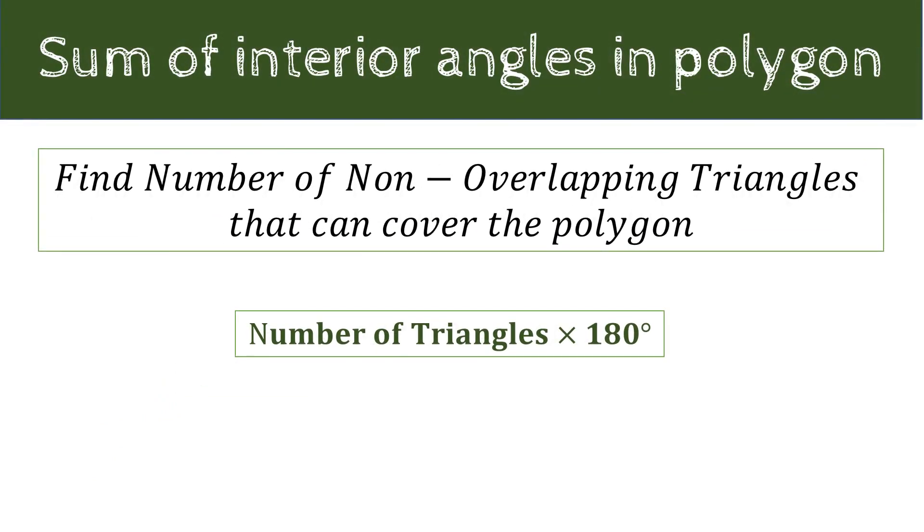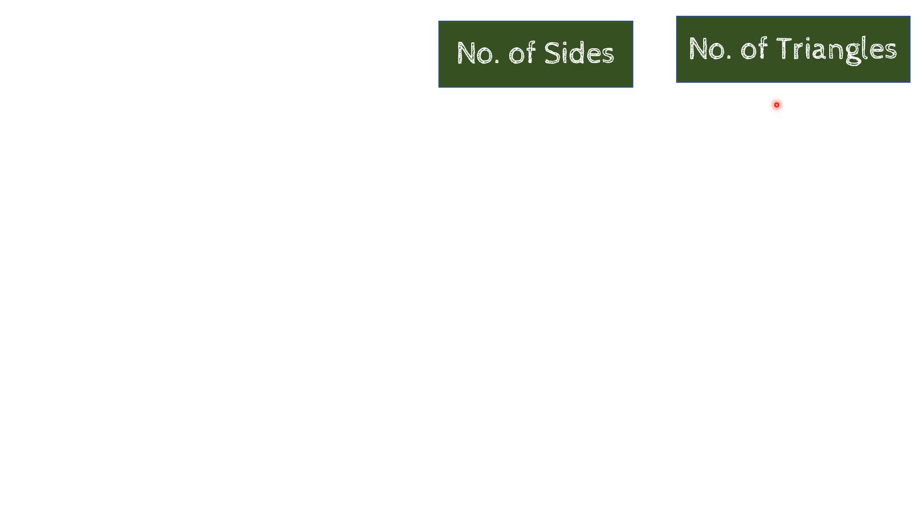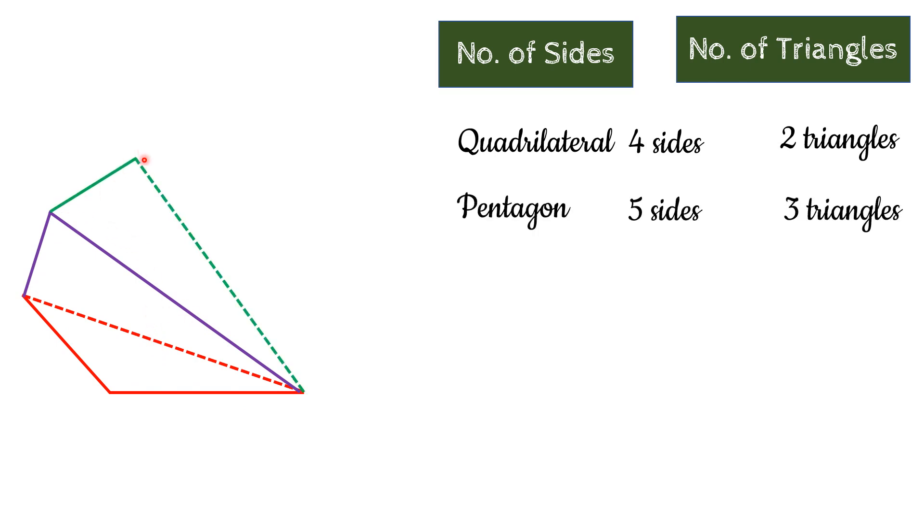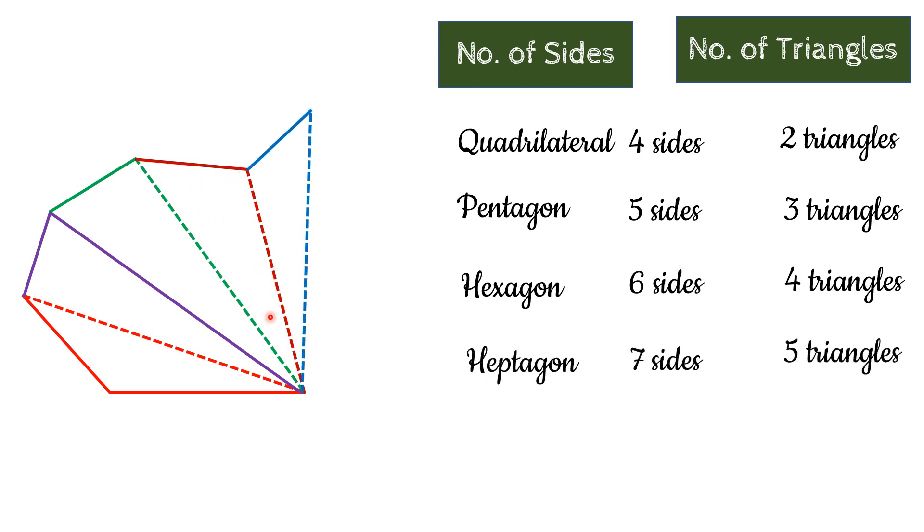Let us try to find a general case with n-side polygon. We always try to find out the number of non-overlapping triangle that we can fit into the polygon. And then number of triangles into 180 degree will give us the total sum of interior angles of that polygon. Let us try to relate the number of triangles on the basis of given number of sides. And we know that if we have four-sided quadrilateral then we get two triangles. And if it was a pentagon then we have one more side and we get one more triangle. And for hexagon, a six-sided figure, we need one more side but with this side, we can get one more triangle. From here, we can see that with each next sides, we are going to get one more triangle.